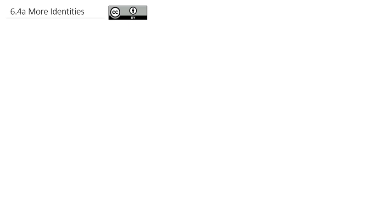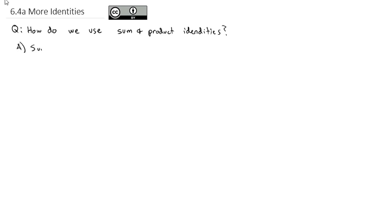Now that we've taken the time to derive some very important identities for trigonometry, we're going to take a look at how we can use these new identities. How do we use the sum and product identities? First, let's look at a use of the sum and difference identities, and just for the sake of review, let's write down what the identities are.